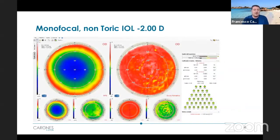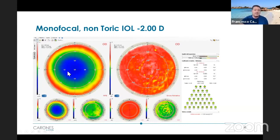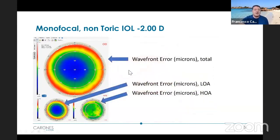I'm presenting first an aberrometer reading of a monofocal non-toric IOL set at minus two as the final target. To better explain how these readings should be interpreted: here is the wavefront error in terms of microns and the total wavefront error, the low order aberrations wavefront error in microns, and here the high order aberrations wavefront error in microns.